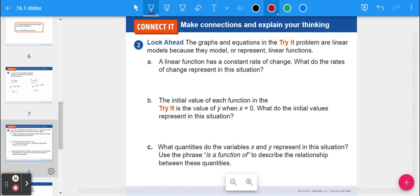Number two: the graphs and equations in the Try It problems are linear models because they model linear functions. A linear function has a constant rate of change. What do the rates of change represent in this problem? We had 1.50 and 2 - it is the price per topping.